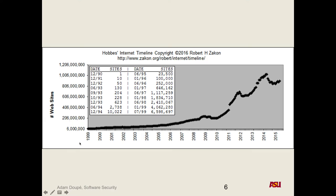Looking at the number of websites from 1999 — already eight years after the web was created — it's at about six million. In 1990, Tim Berners-Lee had the first single website, and you can see over time it slowly grew into the hundreds, then thousands, then millions. Imagine how cool that would be if you're Tim Berners-Lee: you create something that hundreds of people are using, and then it turns into something that literally millions, if not billions of people are using.